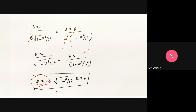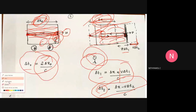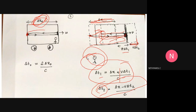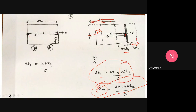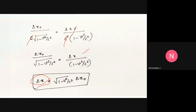Therefore, delta x equals the square root of (1 - v²/c²) multiplied by delta_x0. This is the length contraction formula. The distance delta x measured in the moving frame is the proper length delta_x0 multiplied by sqrt(1 - v²/c²), which is always less than 1, so the measured length is shorter.